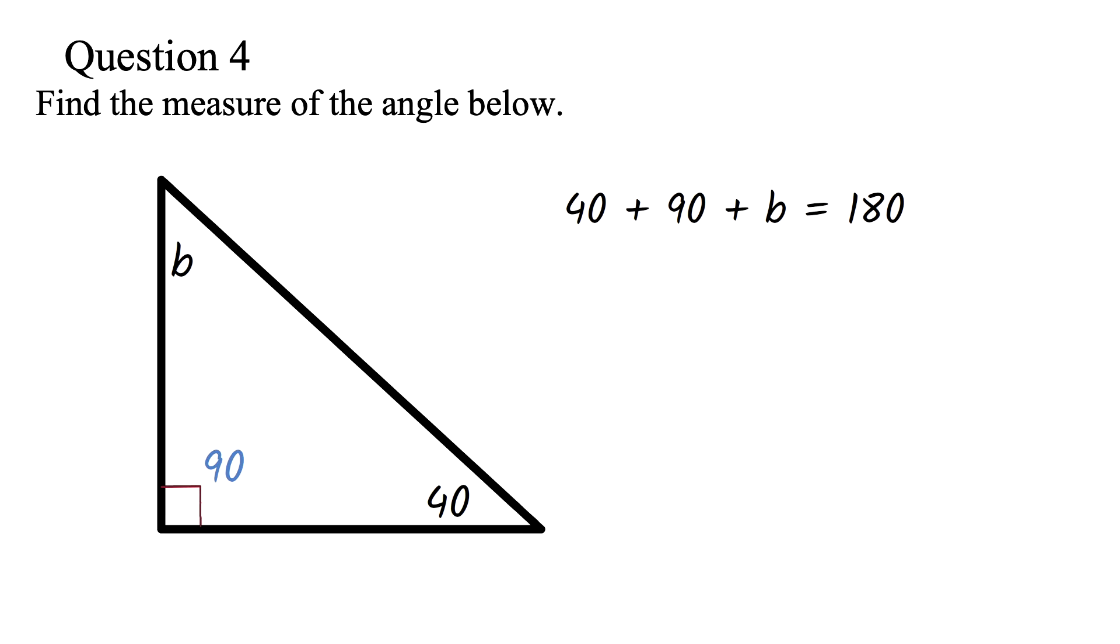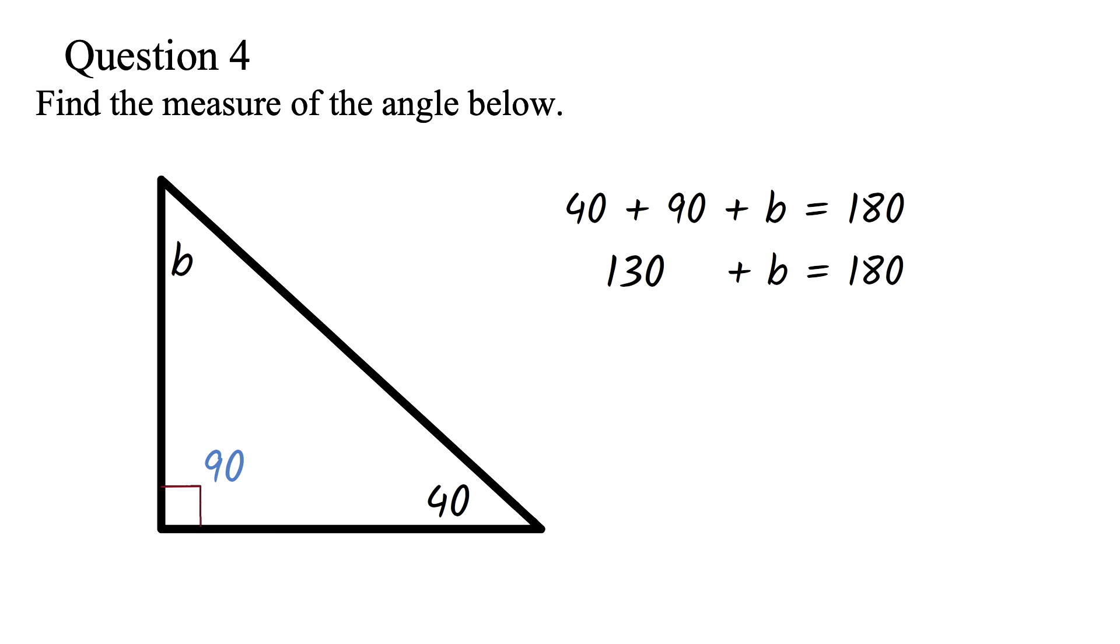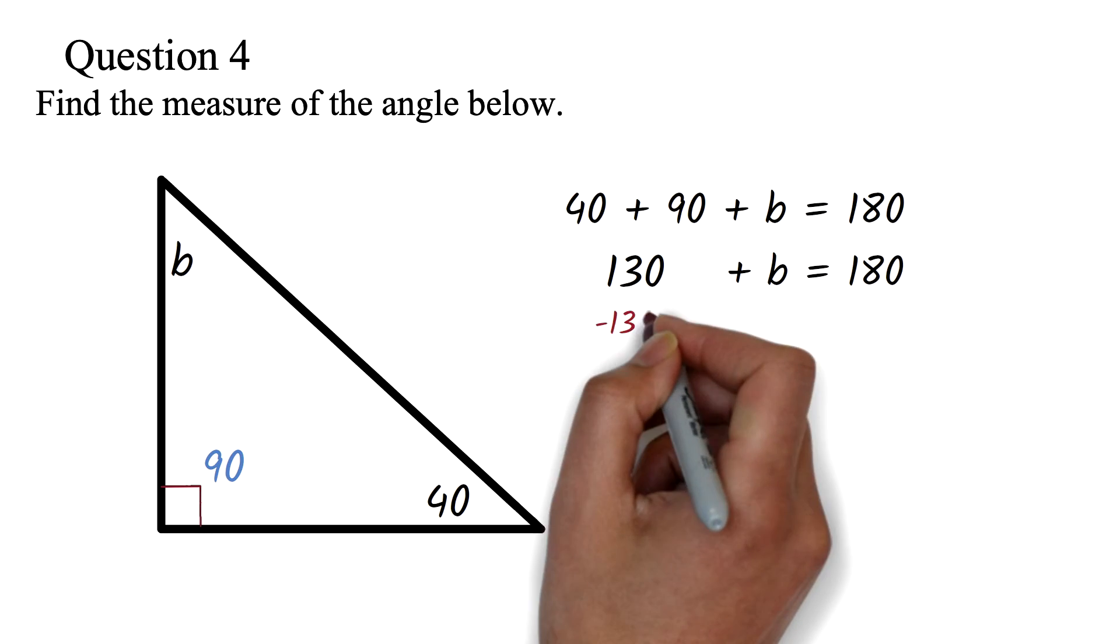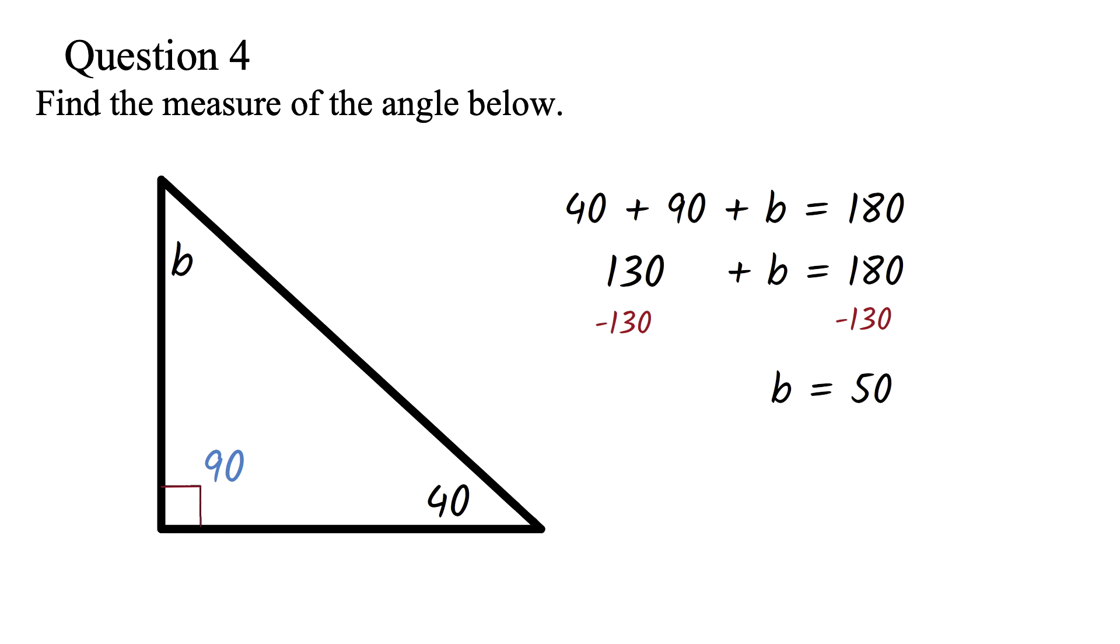40 plus 90 is 130. We have 130 plus B equals 180. One-step equation. Subtract 130 from both sides to get B equals 50 degrees. There's a faster way to solve this but knowing how to solve it by adding everything and equating it to 180 is so important I don't want to even teach any other way. This will ensure you get the answer correct no matter the twist.